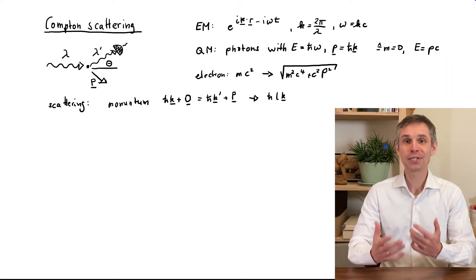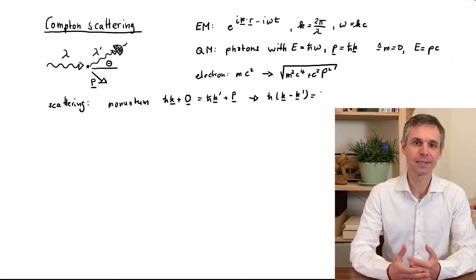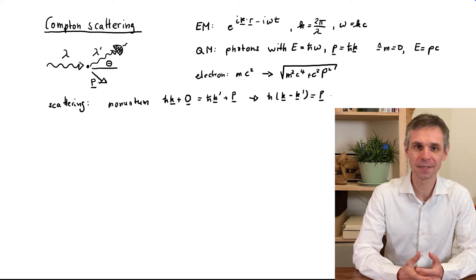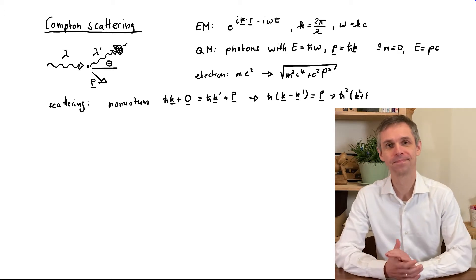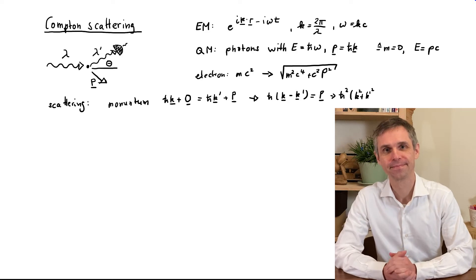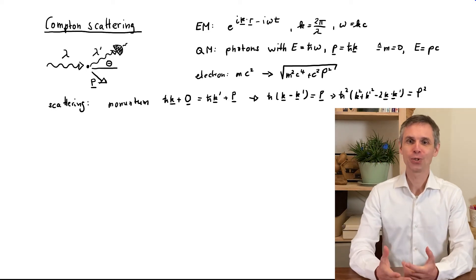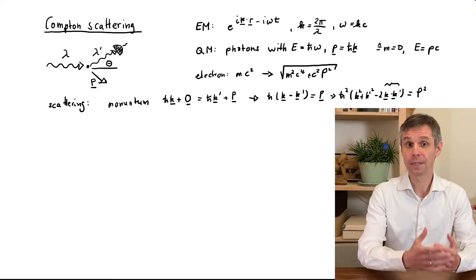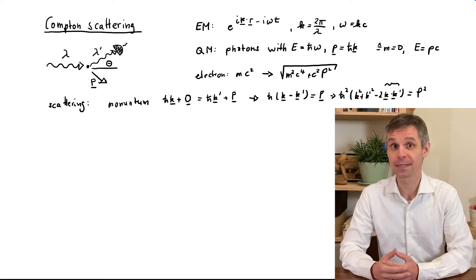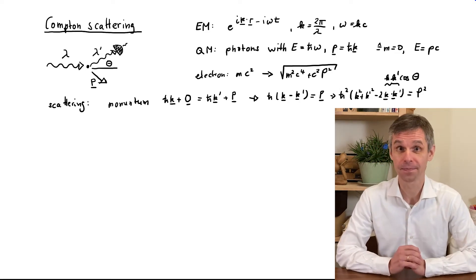We can rearrange this equation to isolate the momentum of the electron after the collision and evaluate the magnitude of its momentum. In this expression we encounter the dot product between the wave vector before and after the scattering process, which depends on the angle of deflection.